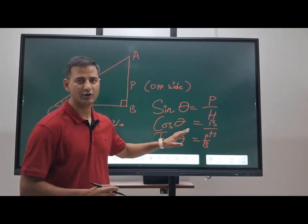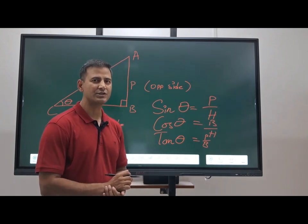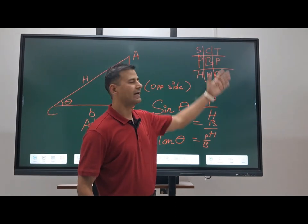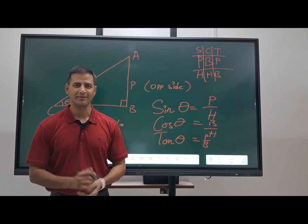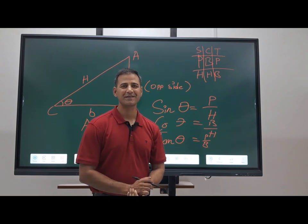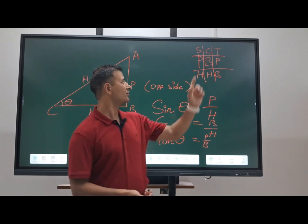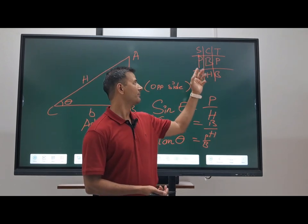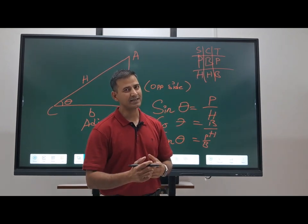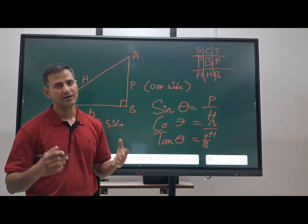These are the trigonometrical ratios you have to remember. I'll give you a simple formula so you don't have to mug it up. For sin, cos, tan — my teacher told me: 'Pandit Badri Prasad Har Har Bhole.' Sin is perpendicular upon hypotenuse — perpendicular is the opposite side. Cos is base upon hypotenuse — base is the adjacent side. And tan is perpendicular upon base. This is how you can remember and derive these ratios.